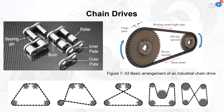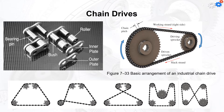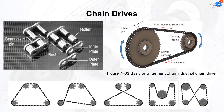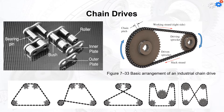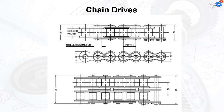The most common type of chain is the roller chain, in which the roller on each pin provides exceptionally low friction between the chain and the sprockets. The roller chain is classified by its pitch — the distance between the corresponding parts of adjacent links, usually illustrated as the distance between the centers of adjacent pins.